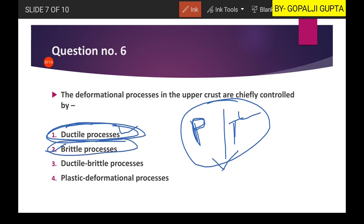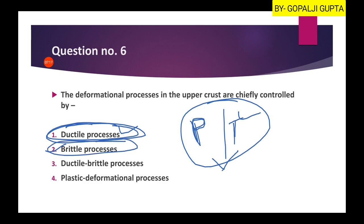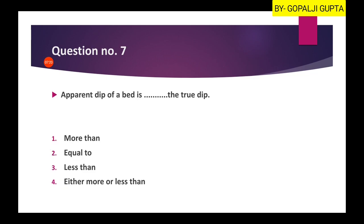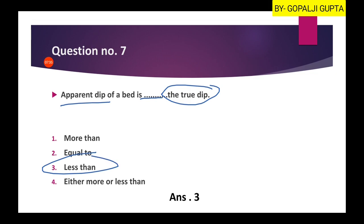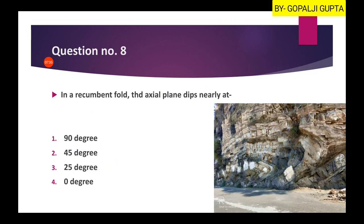Question seven: the apparent dip of a bed is blank compared to the true dip. Apparent dip is always less than the true dip. So the third option is our right answer.